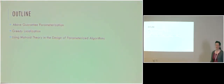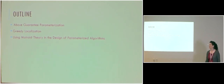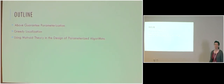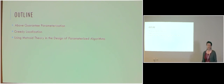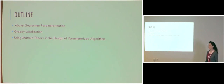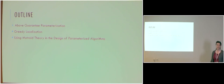We are going to discuss the following topics. The first topic is above-guarantee parametrization, which is a refinement of the standard parametrization, as mentioned yesterday briefly in Daniel's introductory talk. The next topic is greedy localization, which enhances algorithms that are based on branching. And finally, we are going to see how we can use results from matroid theory in the design of parameterized algorithms.